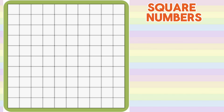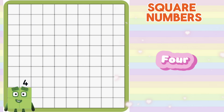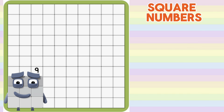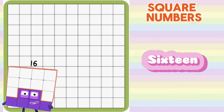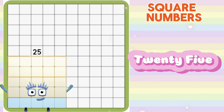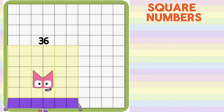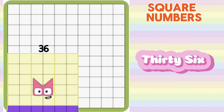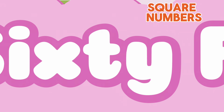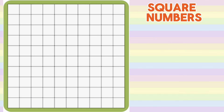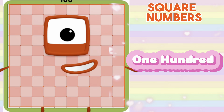Let's check out square numbers: 1, 4, 9, 16, 25, 36, 49, 64, 81, and 100.